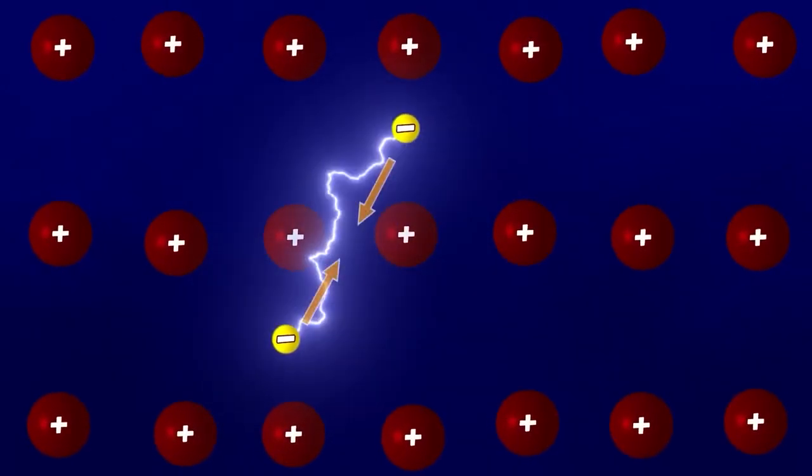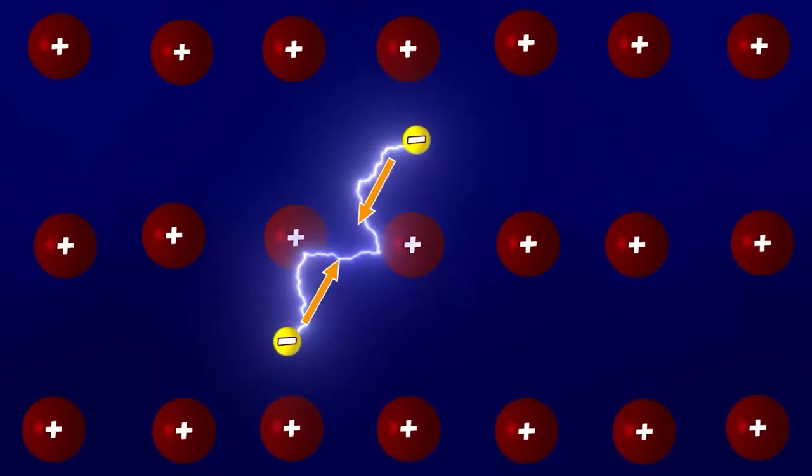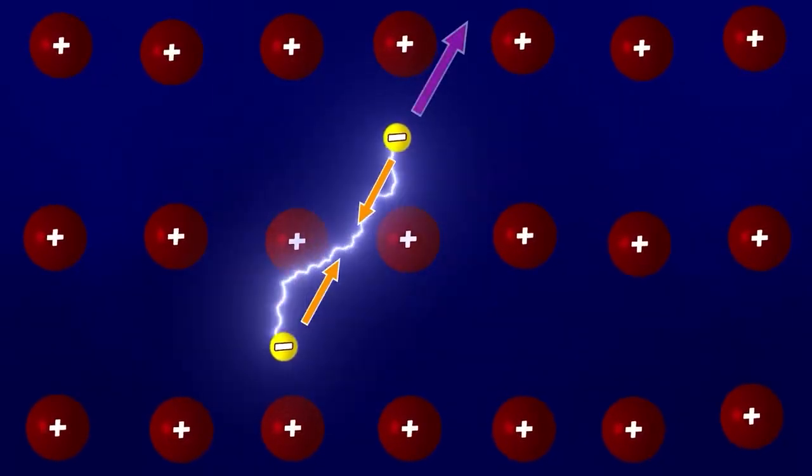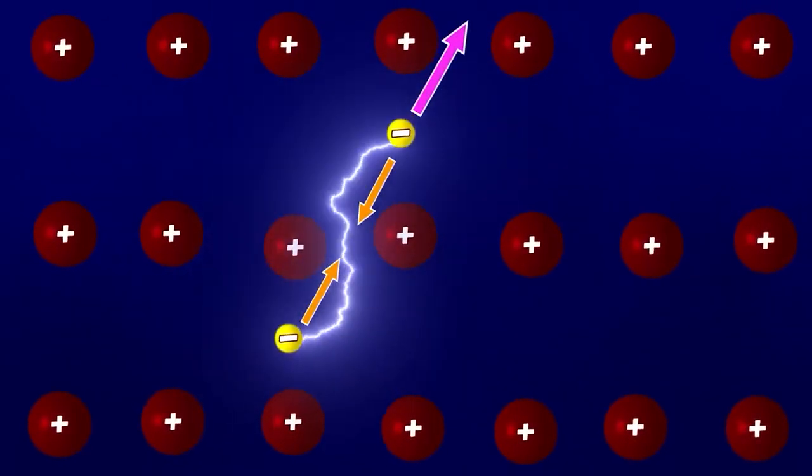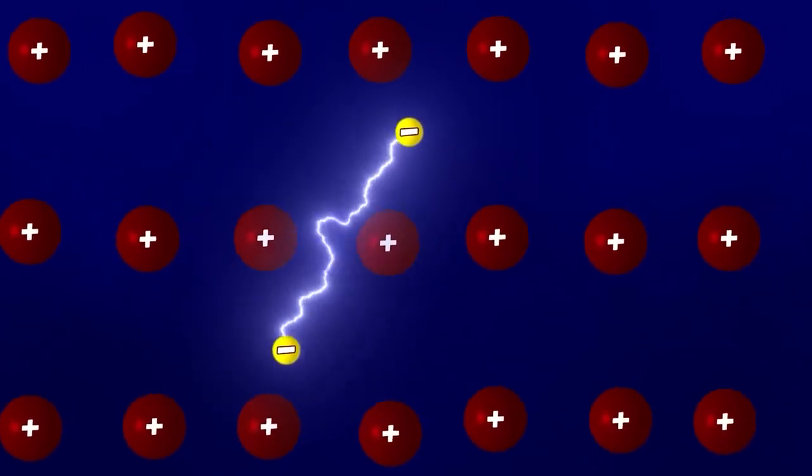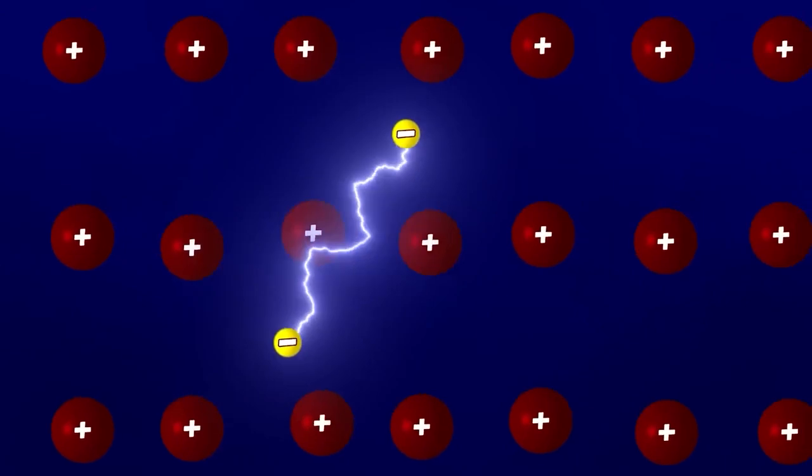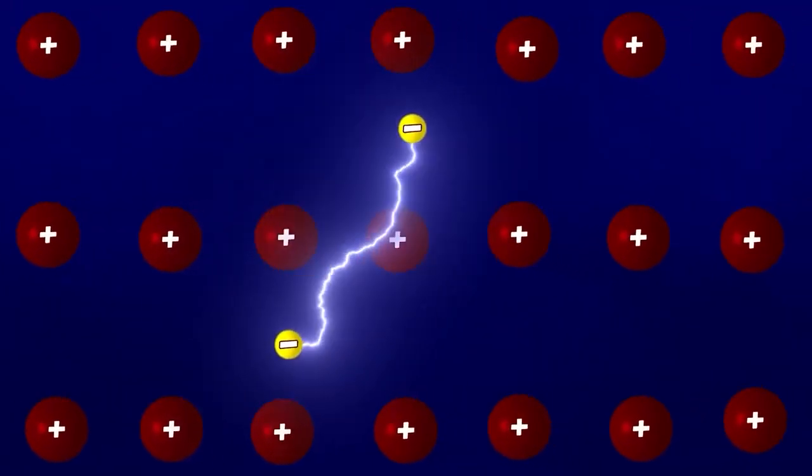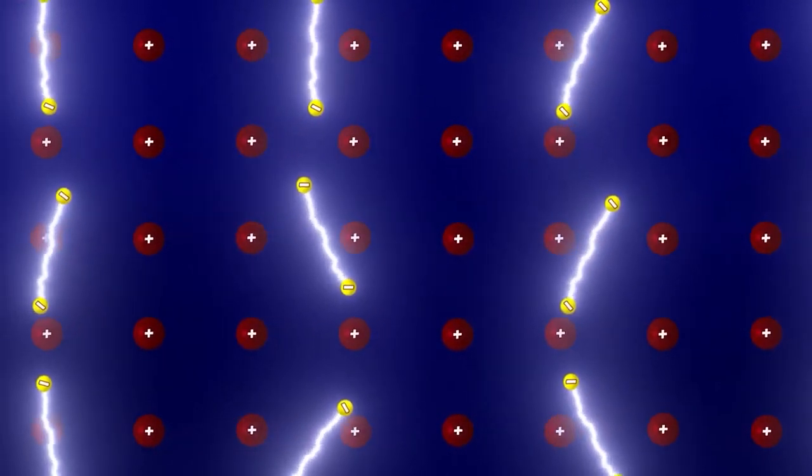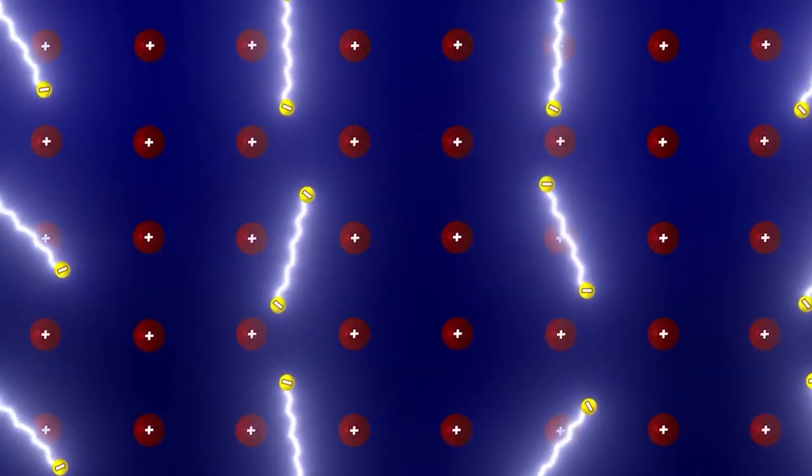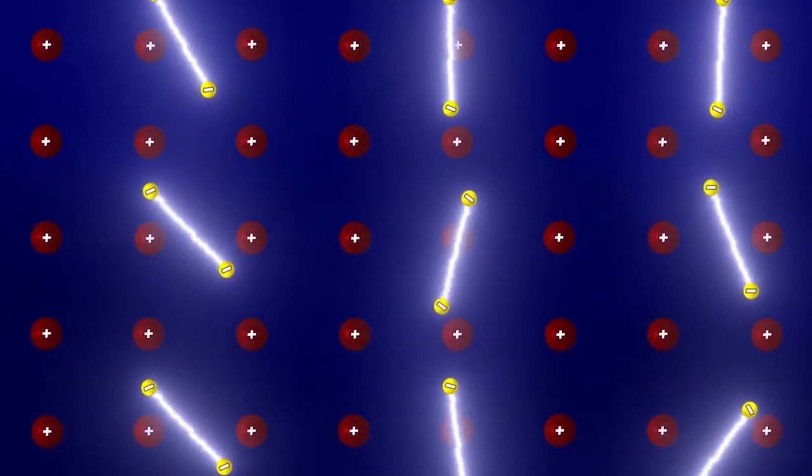Since there is attraction, albeit mediated, between the particles in the pair, it requires some energy to separate one of the electrons from the pair. Now, let's introduce an external electric field. Under its influence, both electrons will shift within the lattice, resulting in an electric current. In this case, the carriers of the current are not individual electrons but Cooper pairs, and this is where the most intriguing part begins.